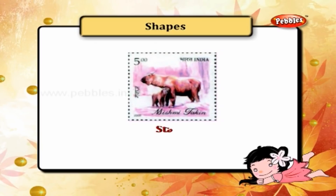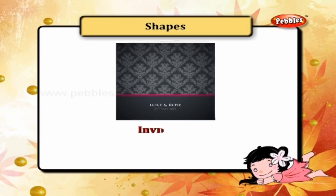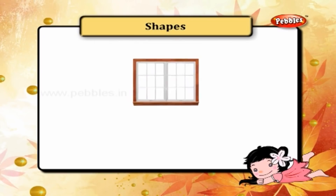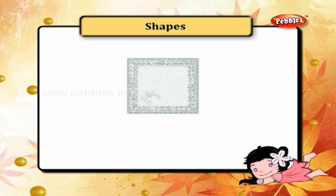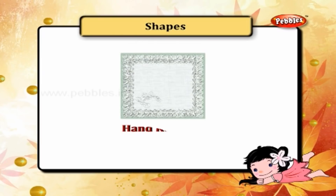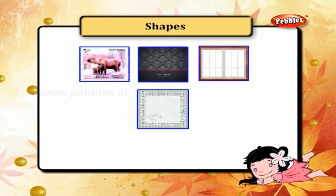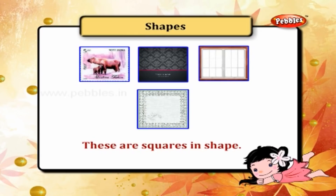This is a stamp. And this is an invitation. This is a window. And this is a handkerchief. These are square in shape.